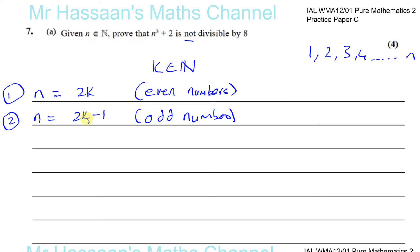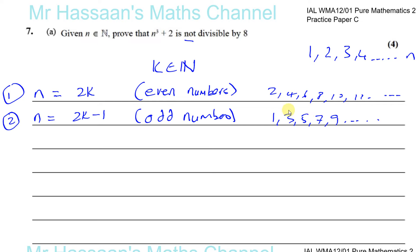For n = 2k − 1: when k is 1 that gives 1, when k is 2 that gives 3, when k is 3 that gives 5, when k is 4 that gives 7 — so it includes 1, 3, 5, 7, 9 and all the odd numbers. And n = 2k includes all even numbers 2, 4, 6, 8, 10, 12 and so on — together these cover every possible natural number.